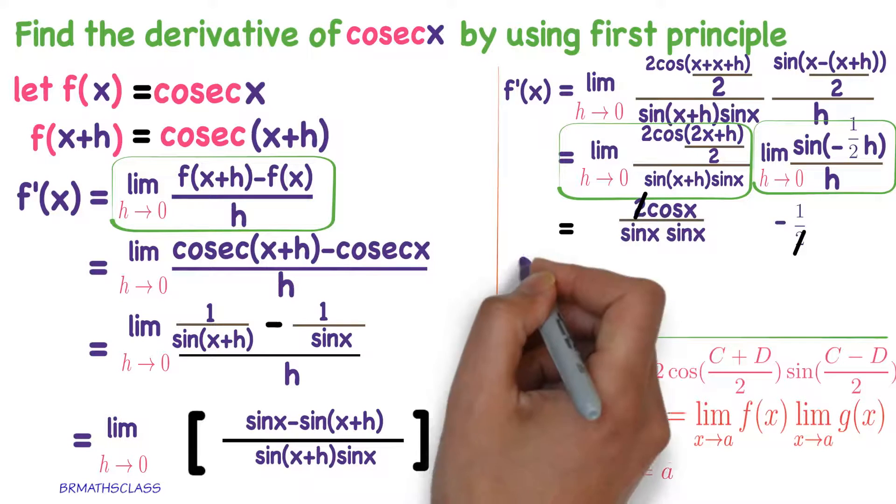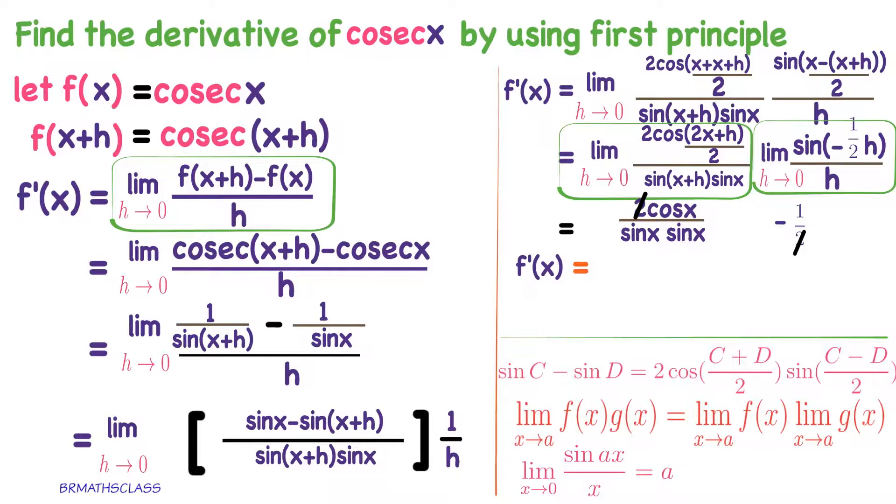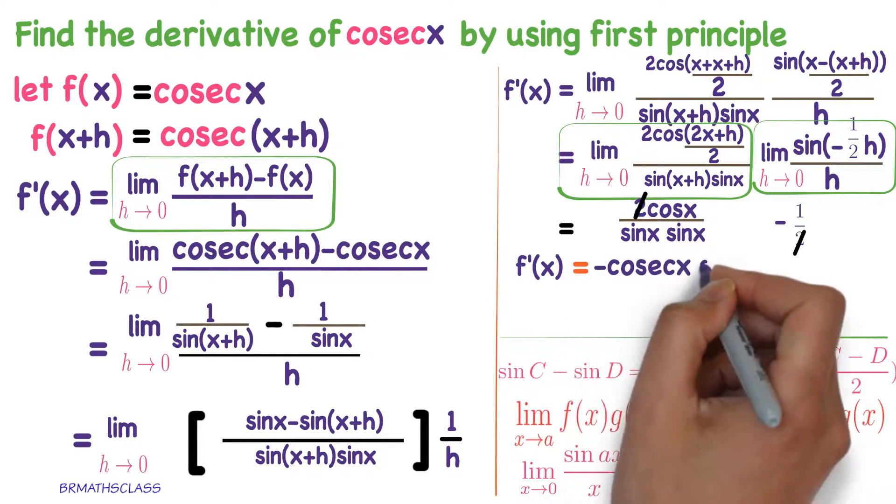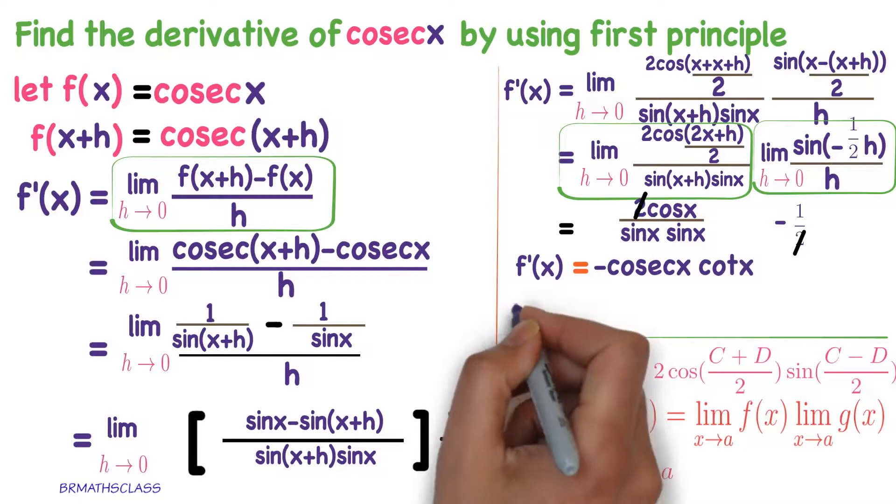Now, what is remaining? Minus is remaining. And you observe here, 1 by sin x can be written as cosecant x. That remaining minus I written, 1 by sin x is written as cosecant x. Cos x by sin x is cot x.